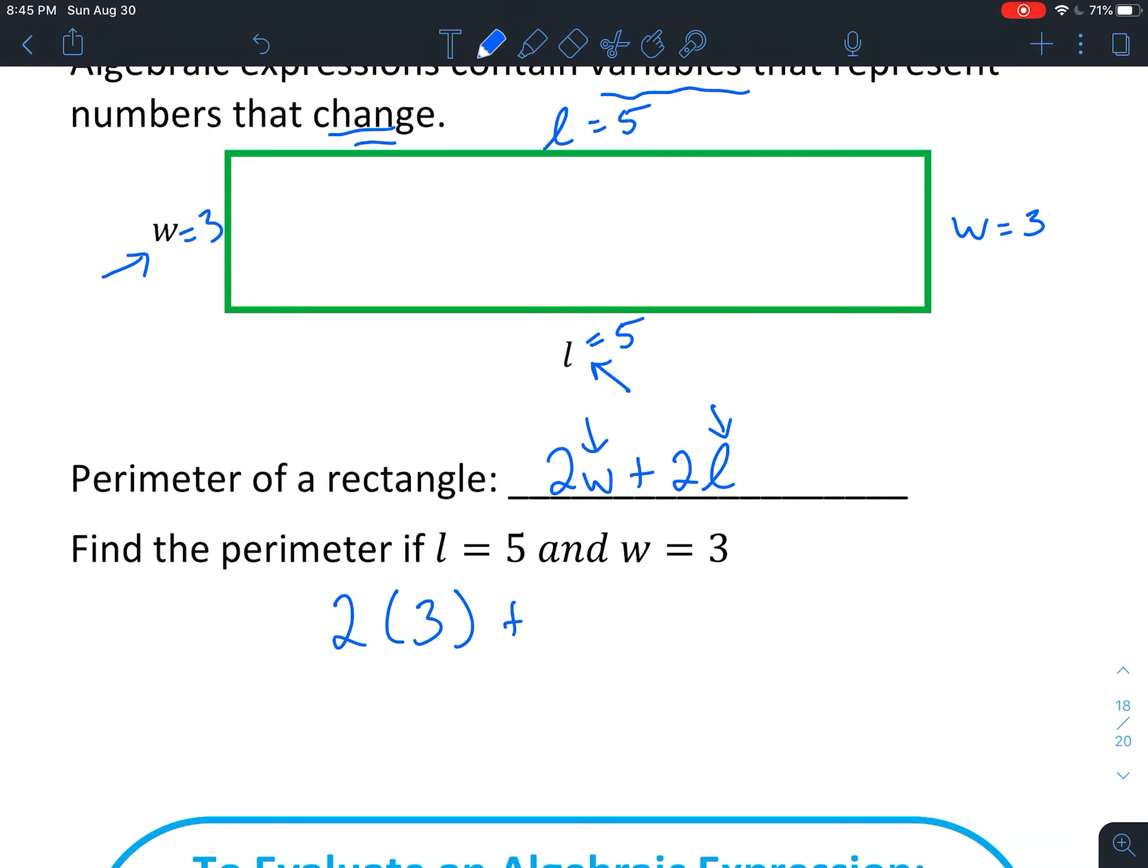And then plus 2 times, in this little blank space right here, we used to have an L. However, now we know that L is 5. So we're going to pop that 5 right into the parentheses.